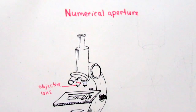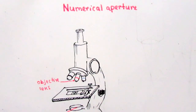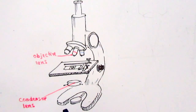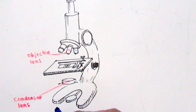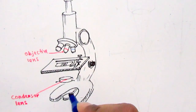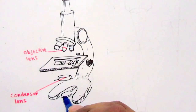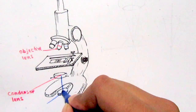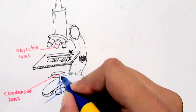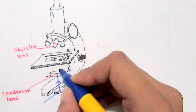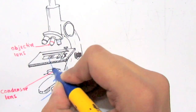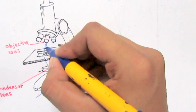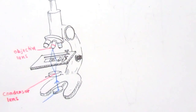In this video I'm going to talk about numerical aperture of a microscope. Here is a simple light microscope. The glass reflects the light, which then goes from the condenser lens into the specimen, and from the specimen light again gets inside the objective.